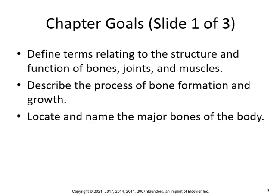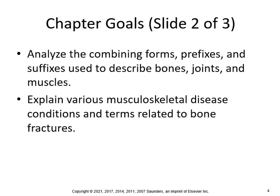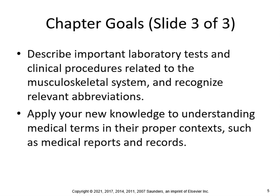Chapter goals include: define terms relating to the structure and function of bones, joints, and muscles; describe the process of bone formation and growth; locate and name the major bones of the body; analyze combining forms, prefixes, and suffixes; explain various musculoskeletal diseases, conditions, and fracture-related terms; describe important lab tests and clinical procedures; and recognize relevant abbreviations.